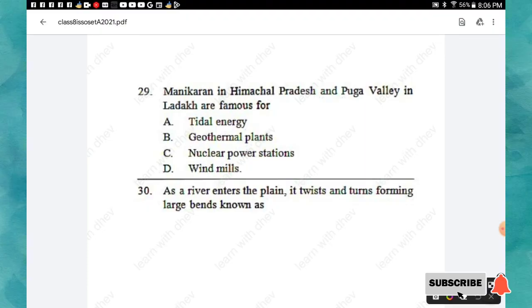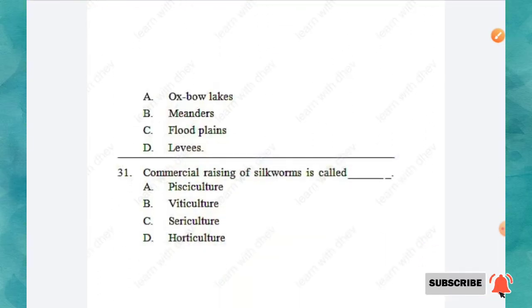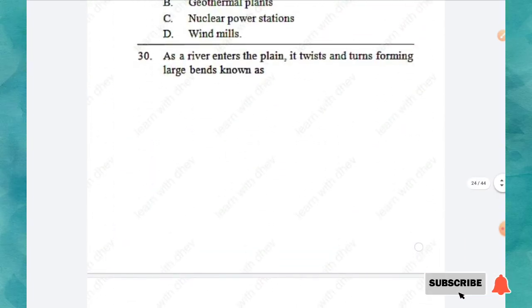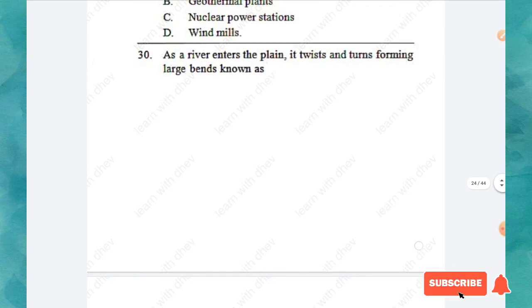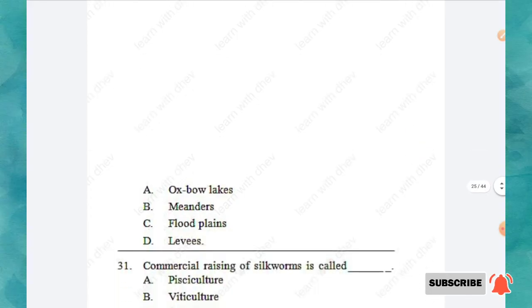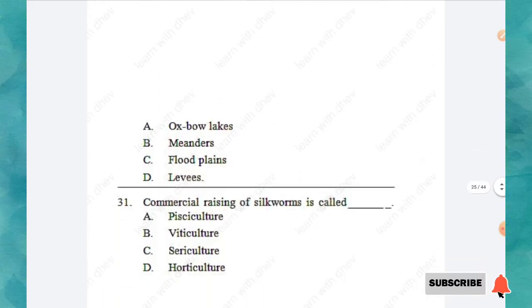Question 28: Which continent is the largest producer of bauxite in the world? Options: South America, Africa, Australia, Asia. The right answer is option C: Australia. Question 29: Manikaran in Himachal Pradesh and Puga Valley in Ladakh are famous for — tidal energy, geothermal plants, nuclear power stations, or windmills? The right answer is option B: geothermal plants. Question 30: As a river enters the plain, it twists and turns forming large bends known as — oxbow lakes, meanders, flood plains, or levees? The right answer is option B: meanders.